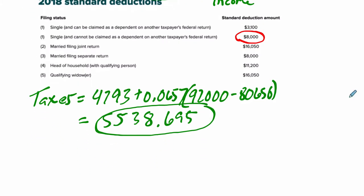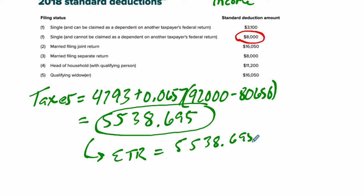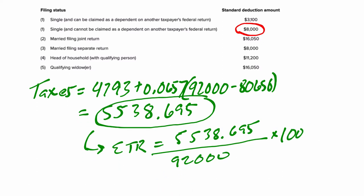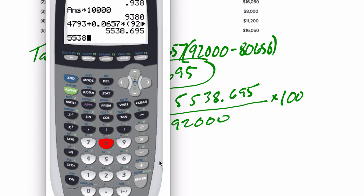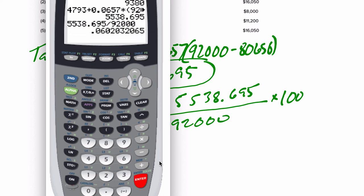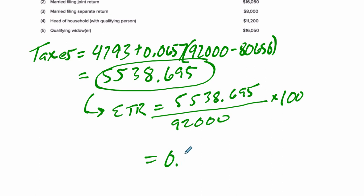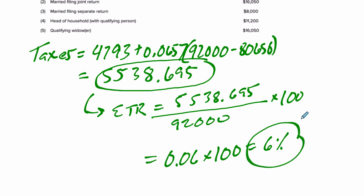One thing you might get asked is: what's your effective tax rate in New York State? The effective tax rate is just the taxes you're paying — $5,538.695 — divided by your total taxable income of $92,000, then multiplied by 100 to get a percentage. That tells you what percent of your taxable income is actually going to New York. So it's about 0.06 times 100, which gives us 6%. So 6% of all your taxable income is going to New York.